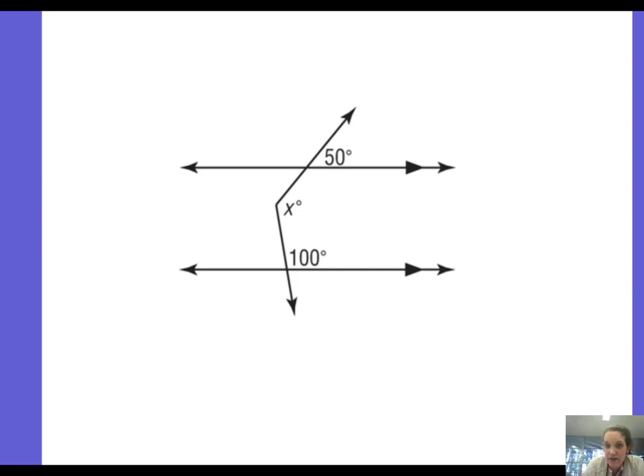Okay, in this next video we are trying to find this angle x. So what we're going to do is we're going to draw in a third parallel line. So we have two lines that are parallel and we're going to draw a third line that's parallel to those two lines right through the vertex, right through this angle that we're trying to find.